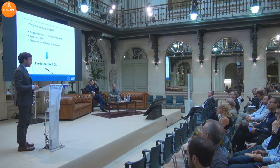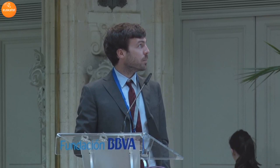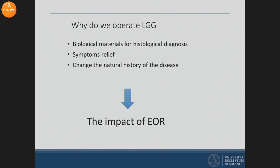Why do we operate low-grade glioma? As Professor Dufour explained, we operate low-grade glioma to obtain biological material for histological diagnosis, to provide symptom relief and improve seizure control, and to change the natural history of the disease. But to have an impact on progression-free survival, a critical role is played by the extent of resection.